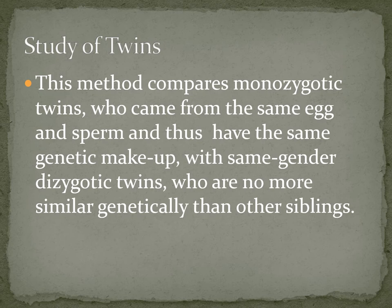Monozygotic twins are compared to dizygotic twins of the same gender. A dizygotic twin comes from two separate eggs, fertilized by two separate sperms. Though they are genetically similar because they came from the same mother and father, they are not genetically identical — only similar. When monozygotic twins are more alike in a trait than dizygotic twins, we see the likely effects of heredity.